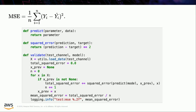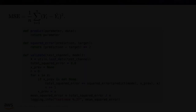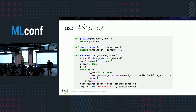Moving on to the mean squared error — that's the training metric for this algorithm. You can also think about performance metrics such as response latencies on inference. We focus on mean squared error: the target minus the prediction squared, summed over all targets and predictions, divided by the total number of predictions. We also log it out so that we can integrate it with SageMaker's hyperparameter tuning jobs.